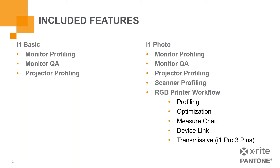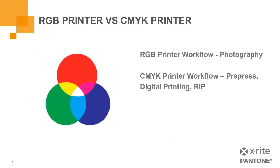Now that we know what's included from the i1 Basic and i1 Photo packages, what makes the i1 Publish package so special? The i1 Publish gives us access to the CMYK printer workflow. This workflow includes the CMYK versions of everything listed in the RGB printer workflow, as well as a couple of unique features.